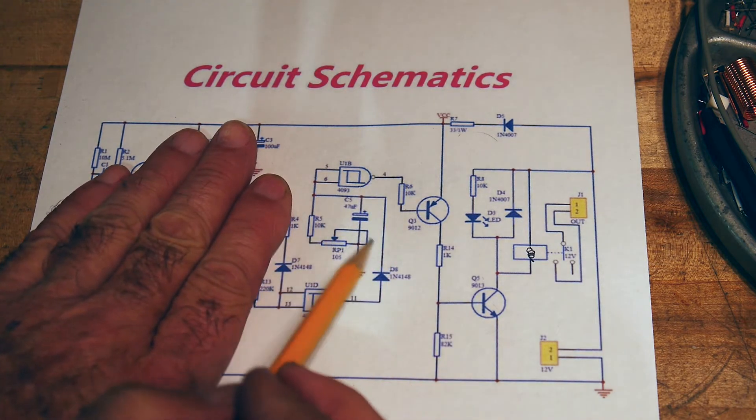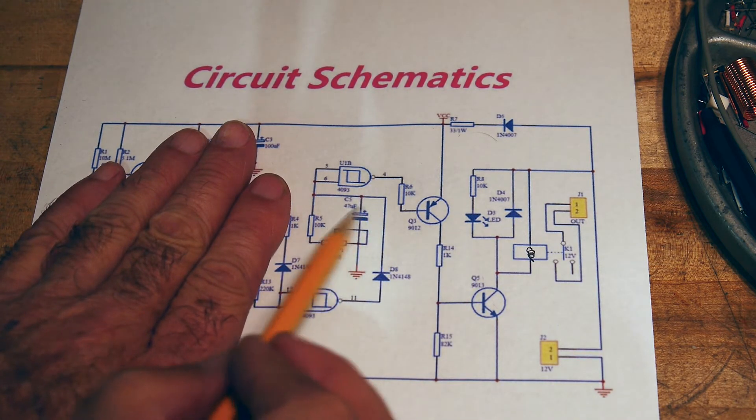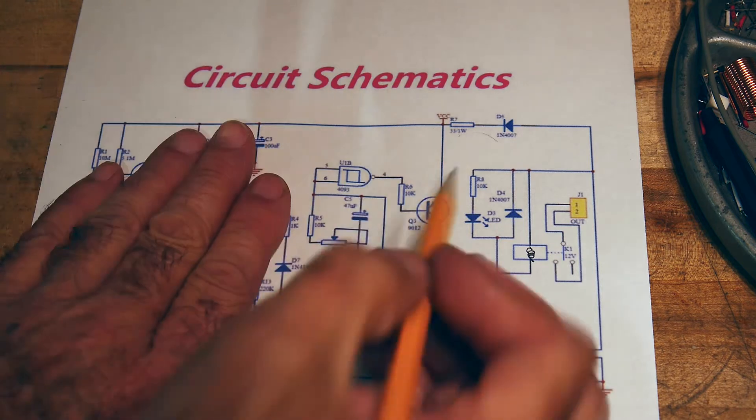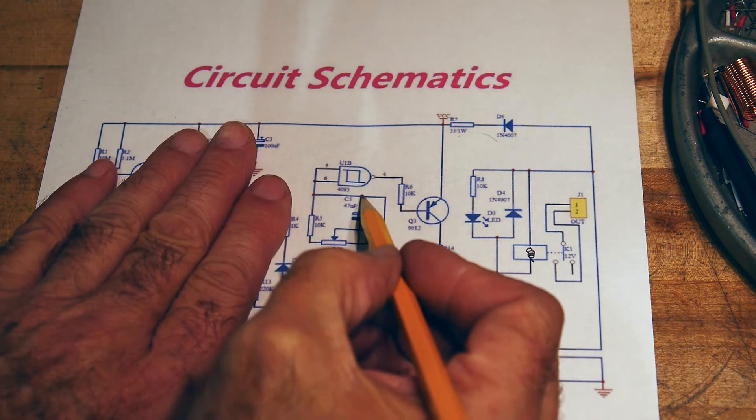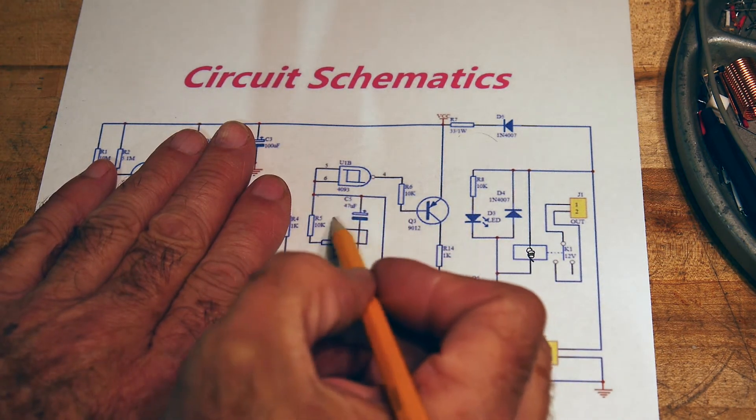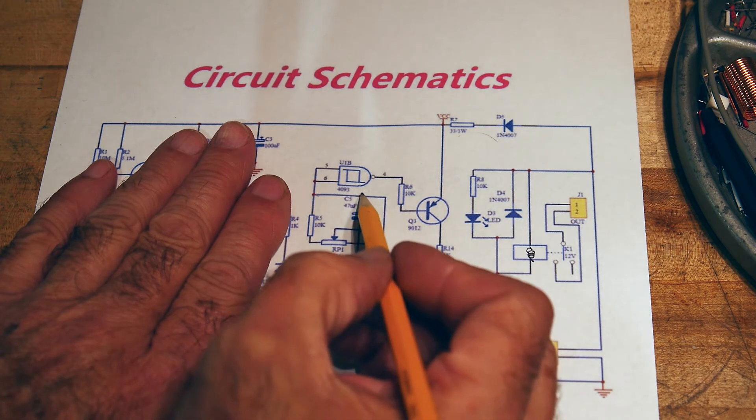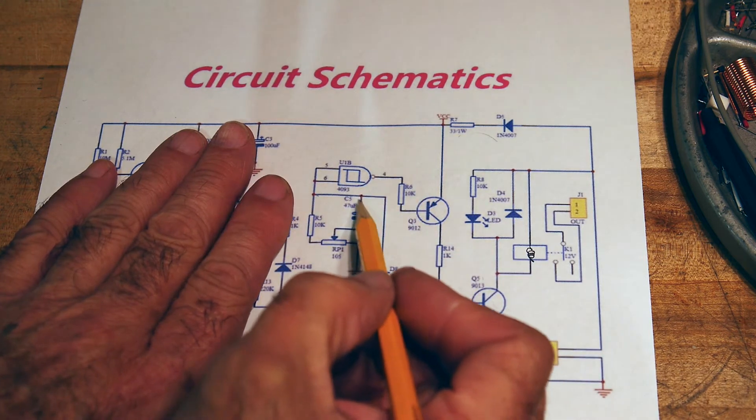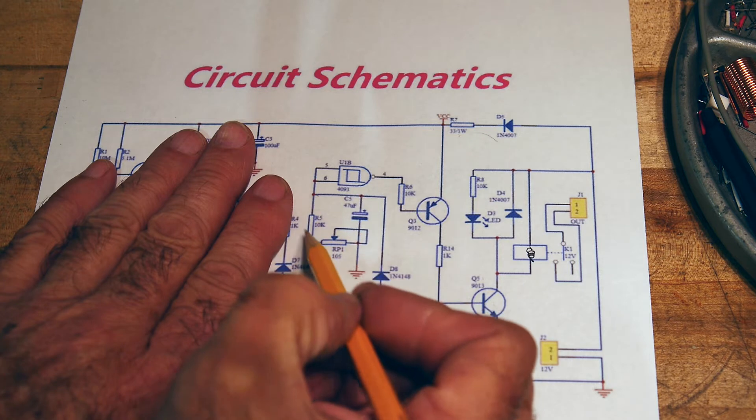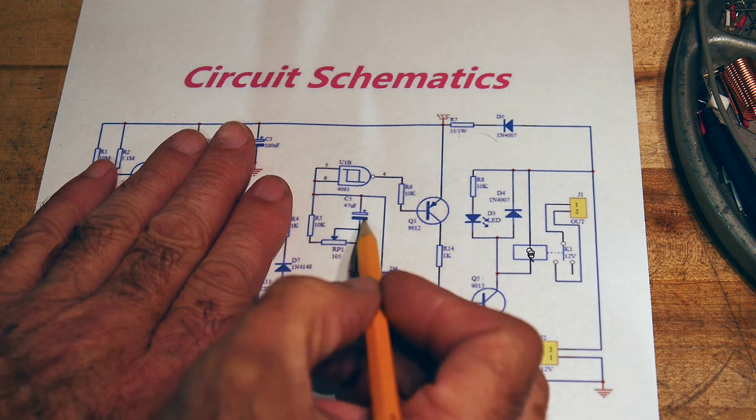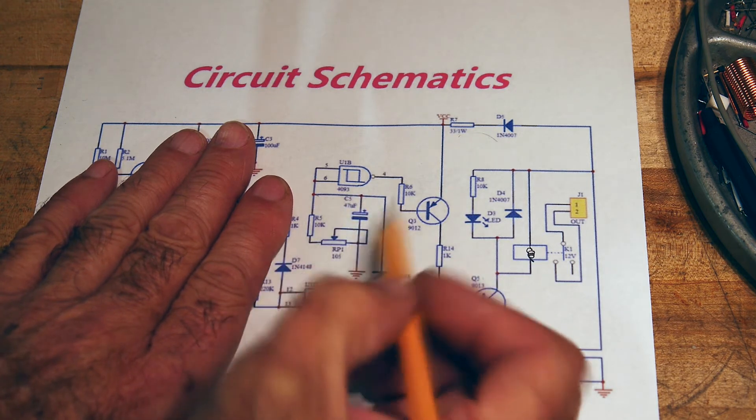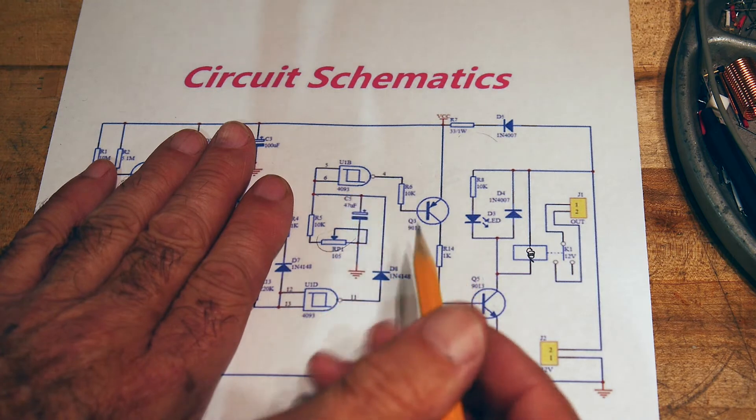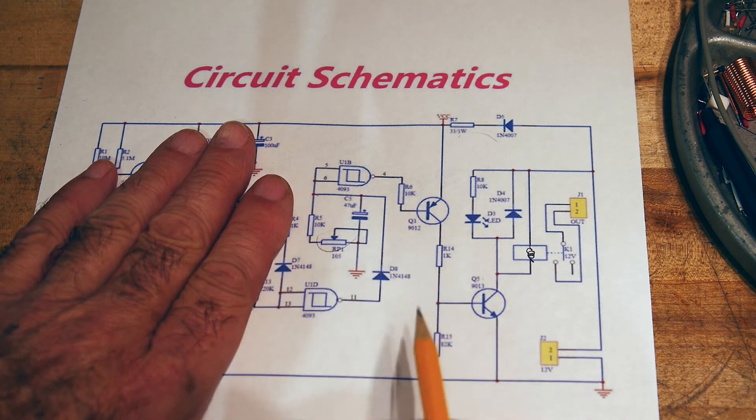We have a 47 microfarad capacitor and a resistor to ground. What this is doing is when this is high, this thing's on. You turn it on by putting voltage here and you charge that capacitor. Then the only thing that holds that capacitor there is the capacitor itself unless it's being bled to ground. This resistor bleeds it to ground. So this is the RC network that keeps it on. This is the potentiometer that you set to adjust how long you want it to stay on.